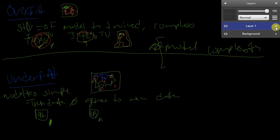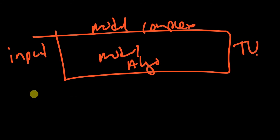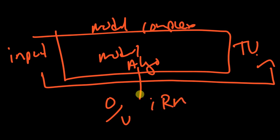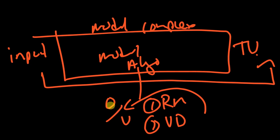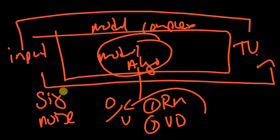As simple as it is — input, model complexity with the algorithm and many other factors, then target variable — everything we're trying to do going from input to target output will constantly face the challenge of over- to underfitting. Our two biggest techniques, resampling methods and validation data sets, will help restore that balance so we can achieve better generalization when new training data arrives.